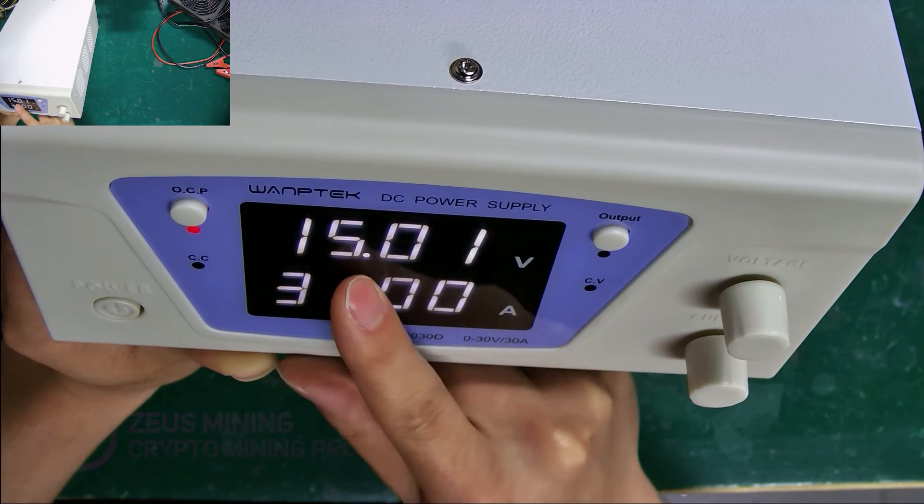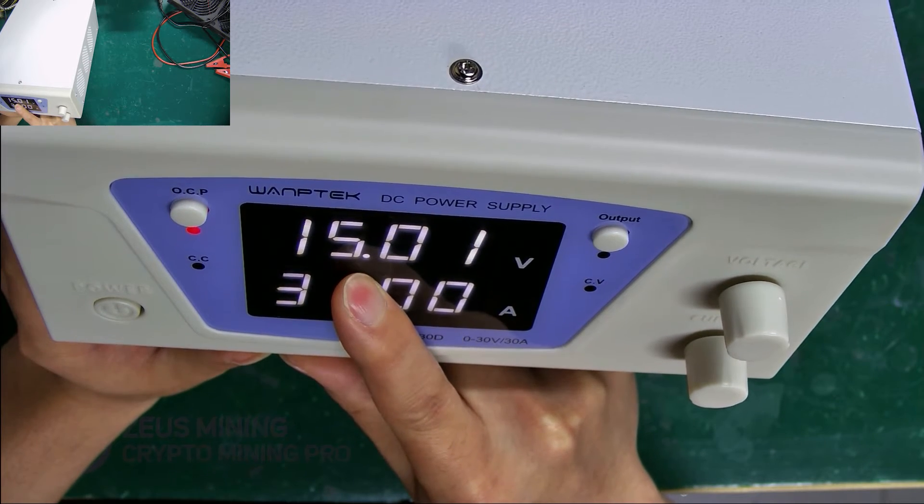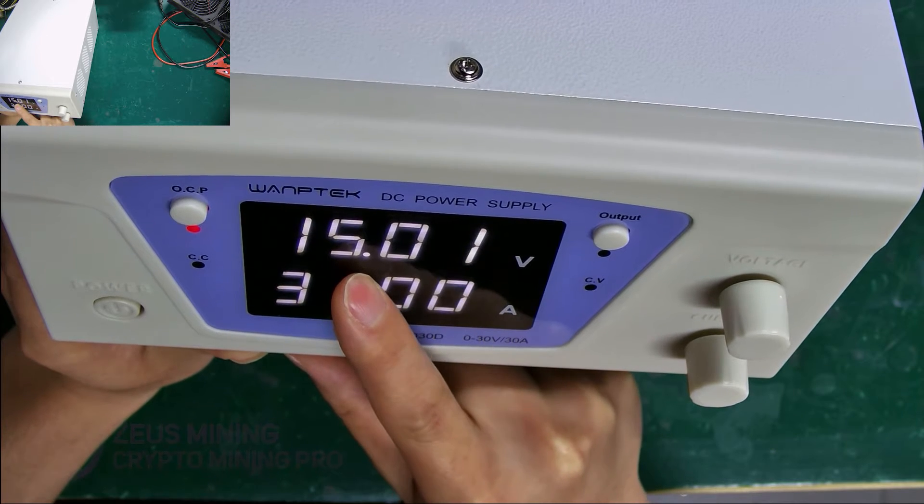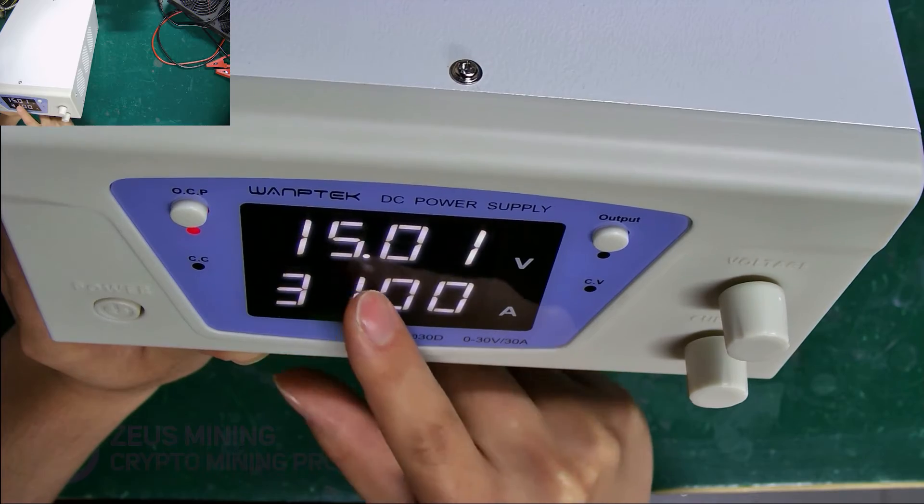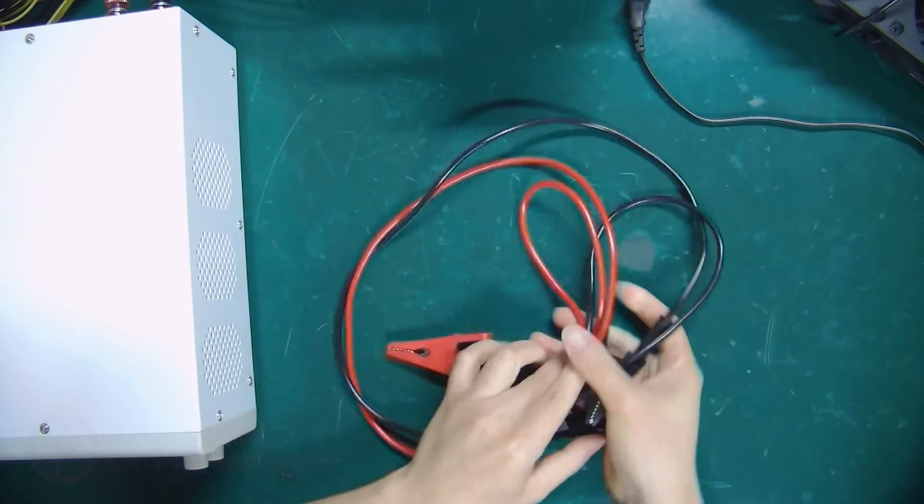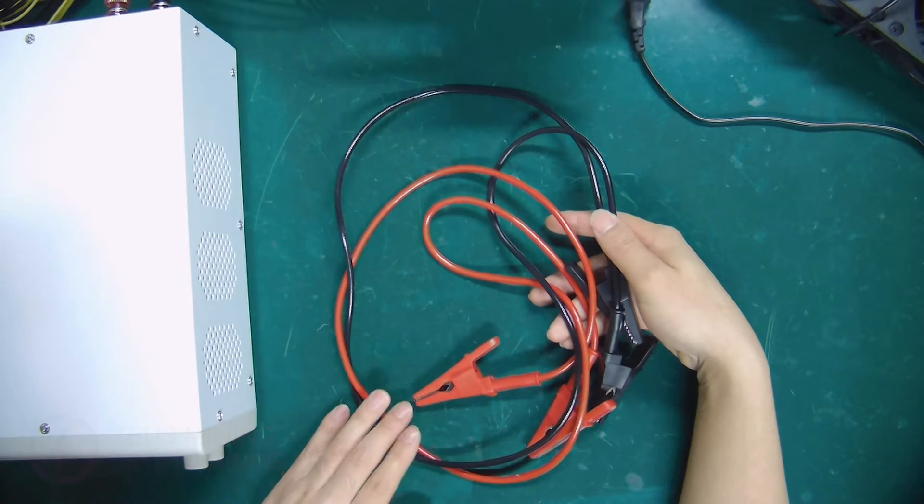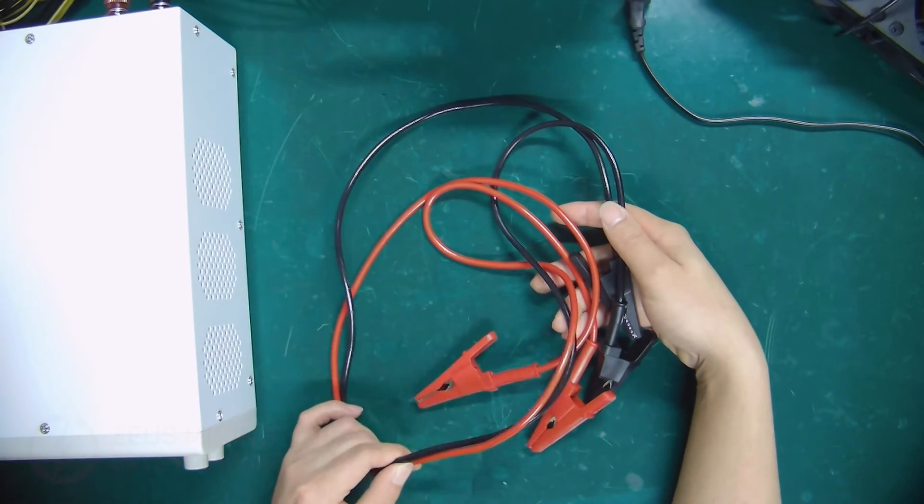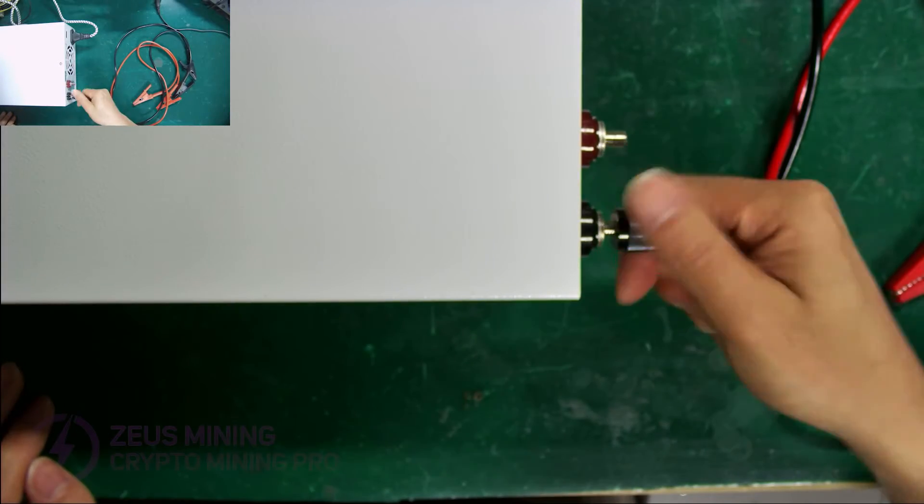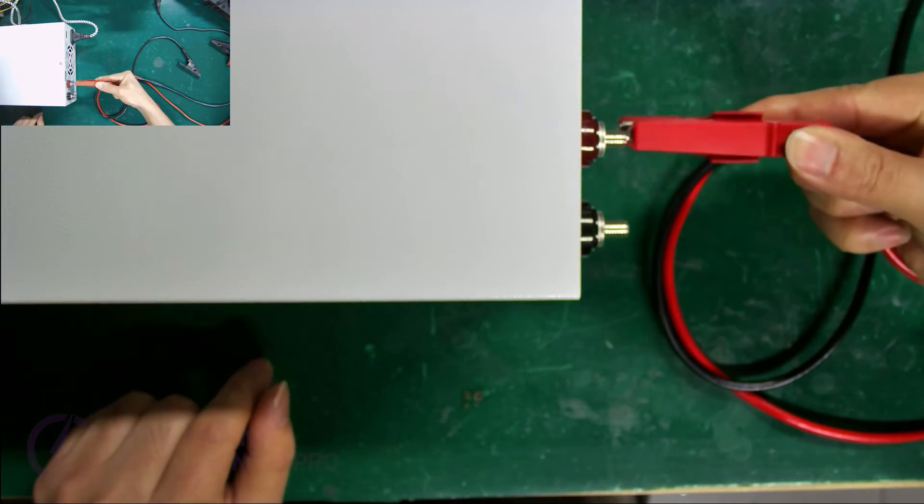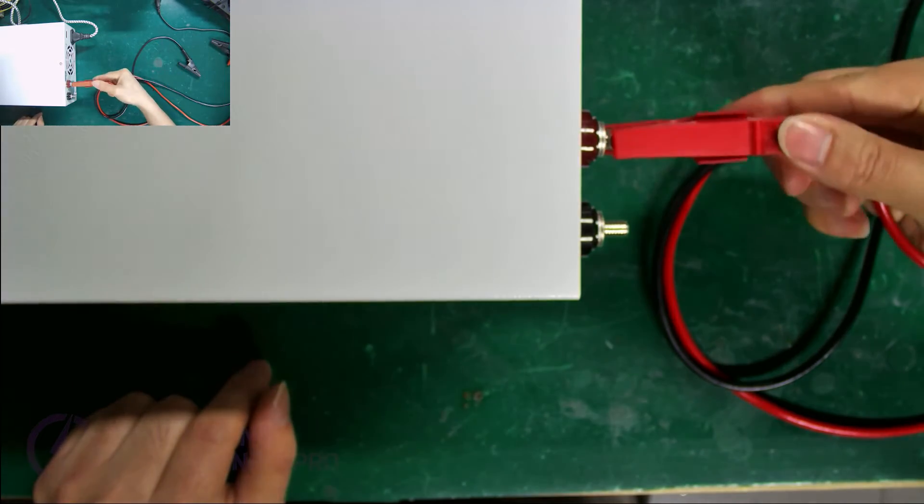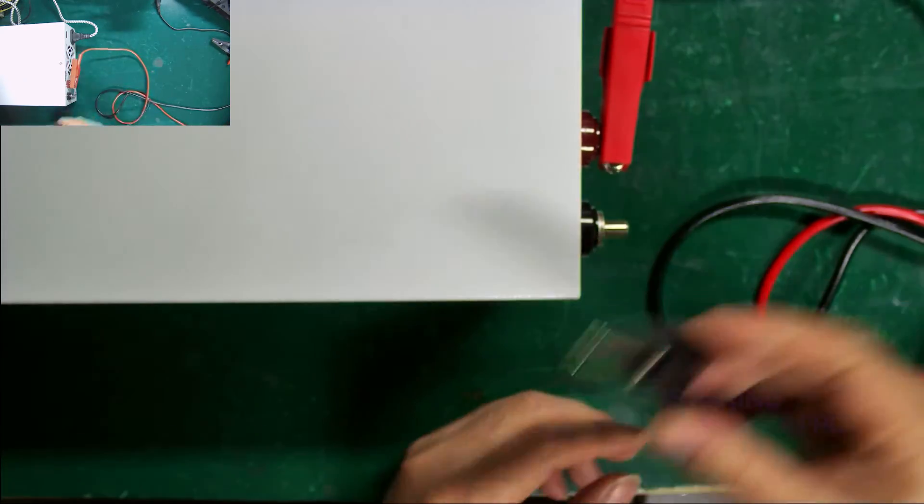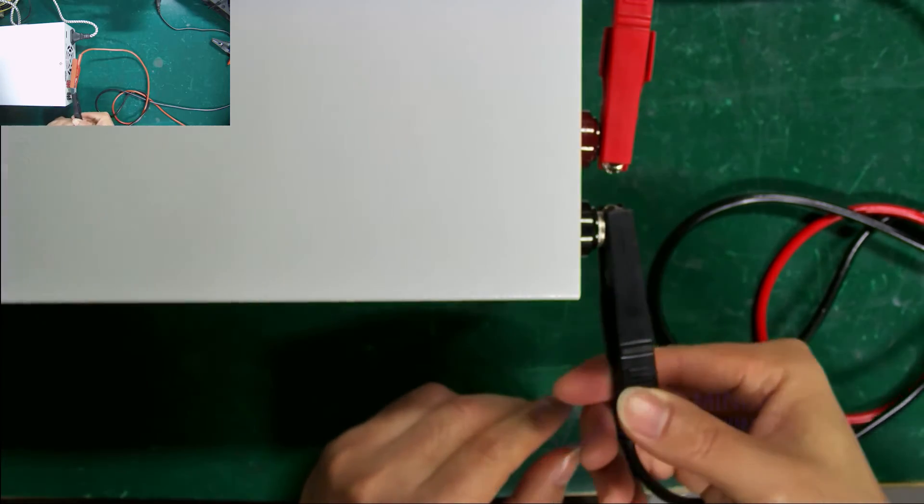Today, I will use an Antminer S19J Pro hash board for the demonstration, so the voltage needs to be set to 15 volts. We will also need to prepare this type of red and black alligator power cord, preferably with a thicker cable to prevent burning. Connect one end of the alligator power cord to the KPS-3030D power supply, making sure not to reverse the positive and negative poles.